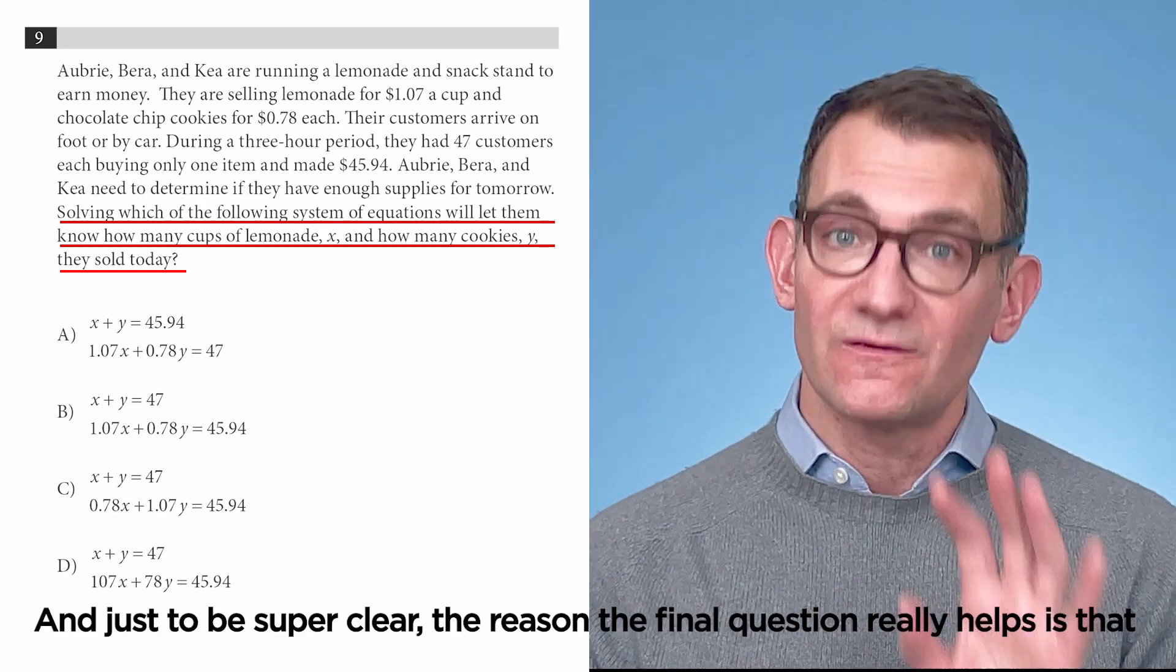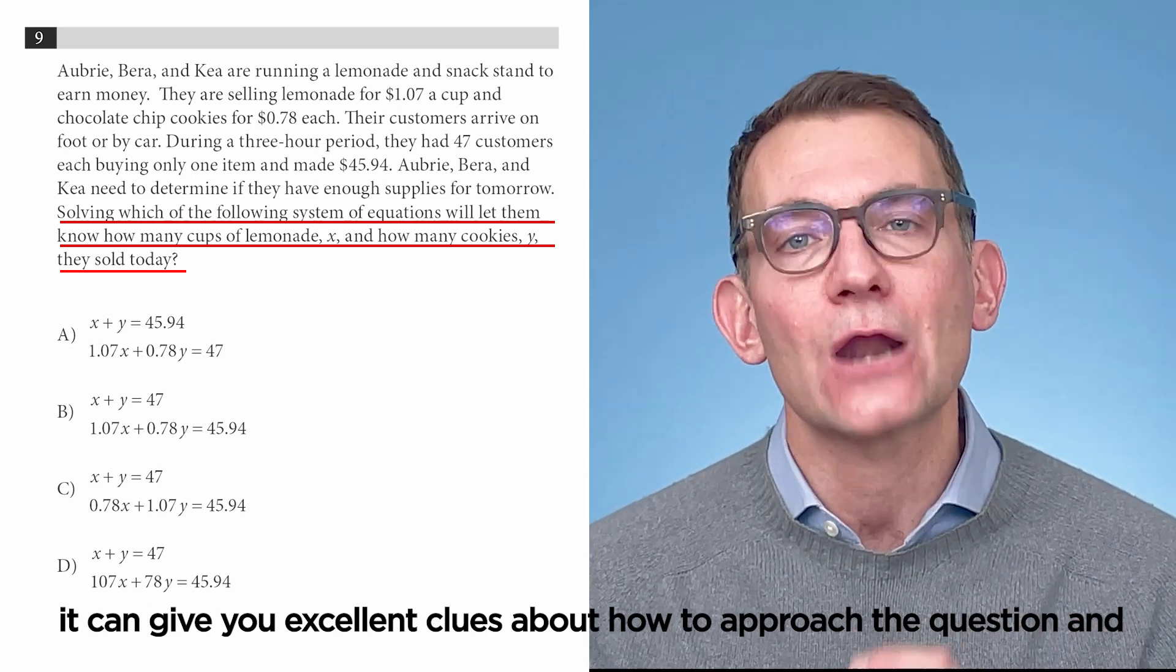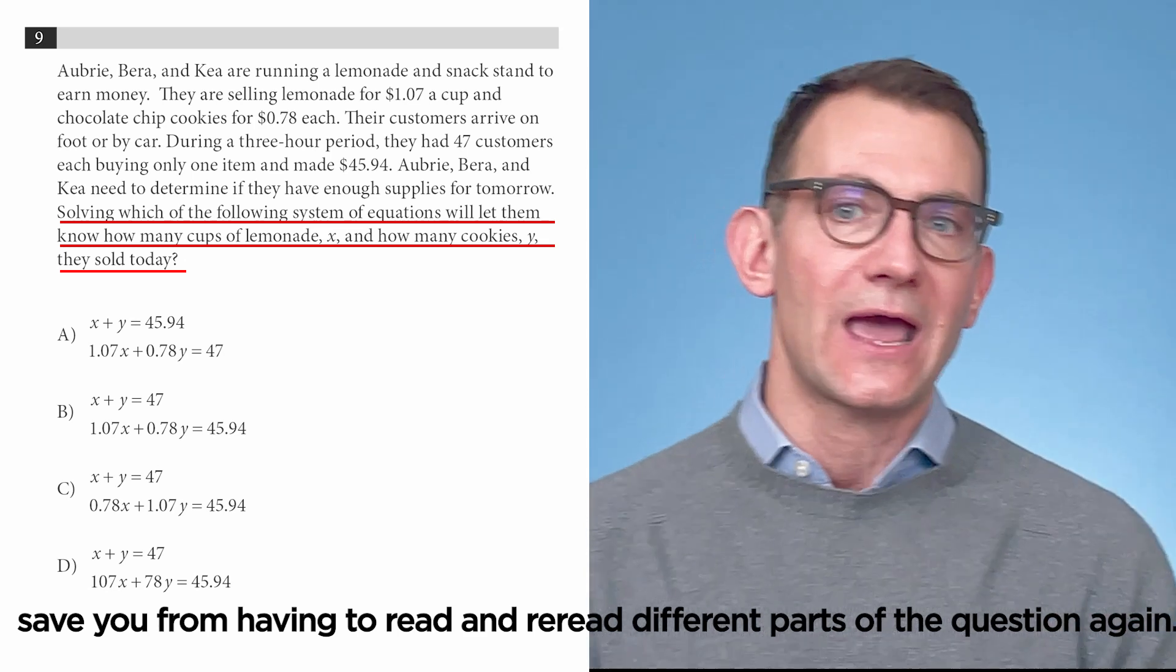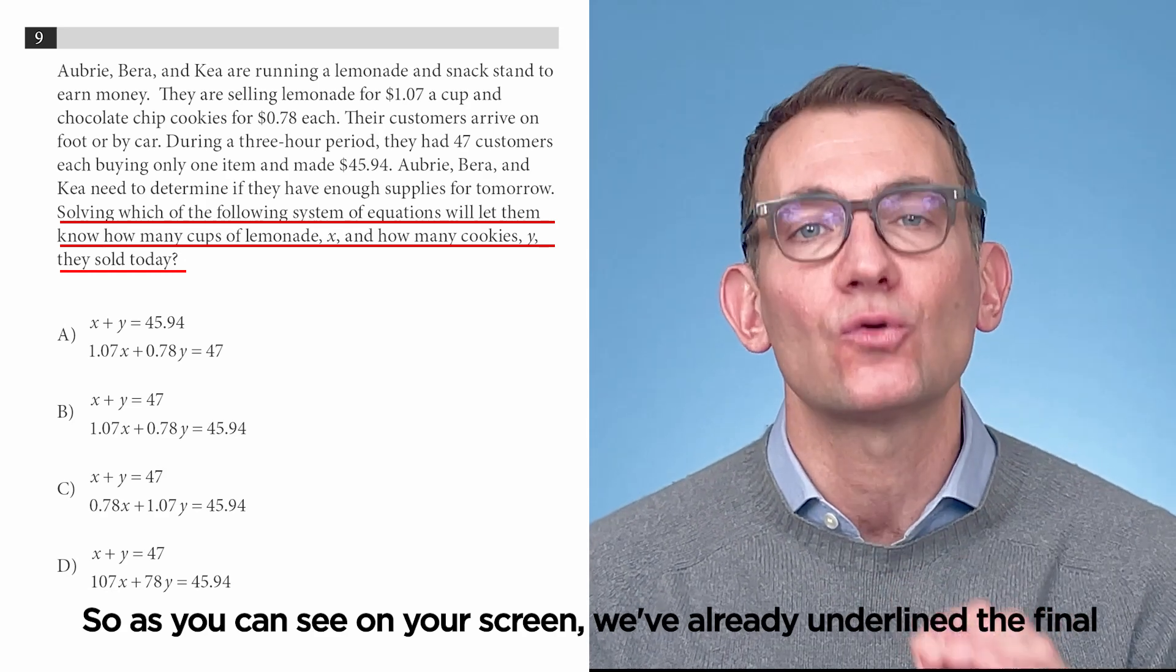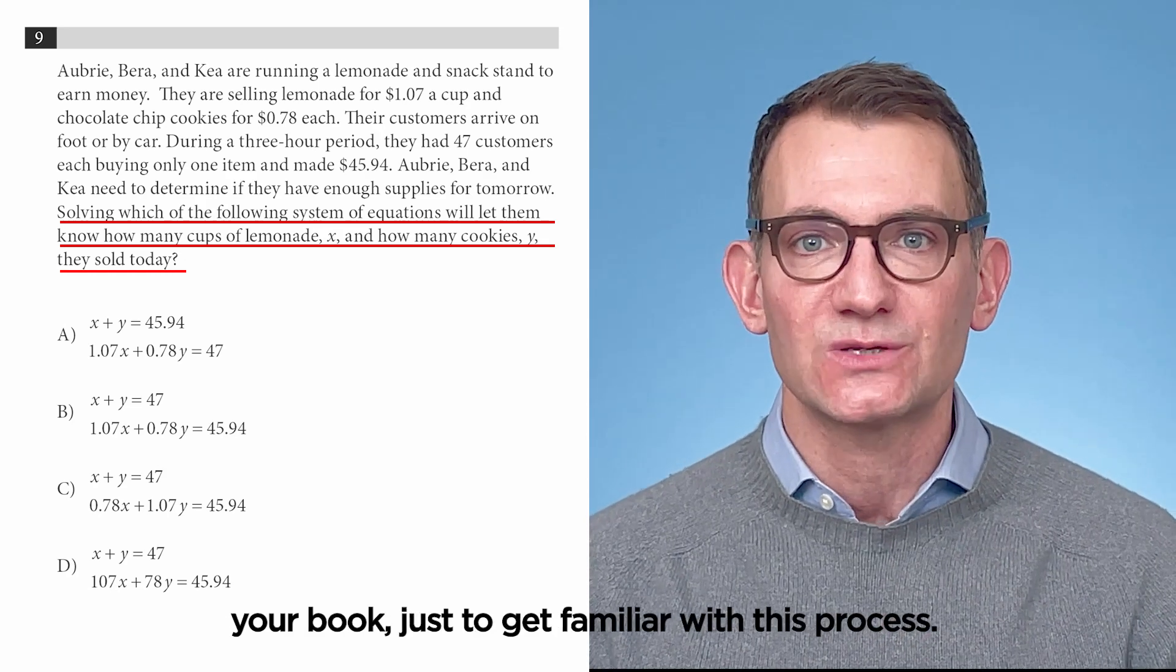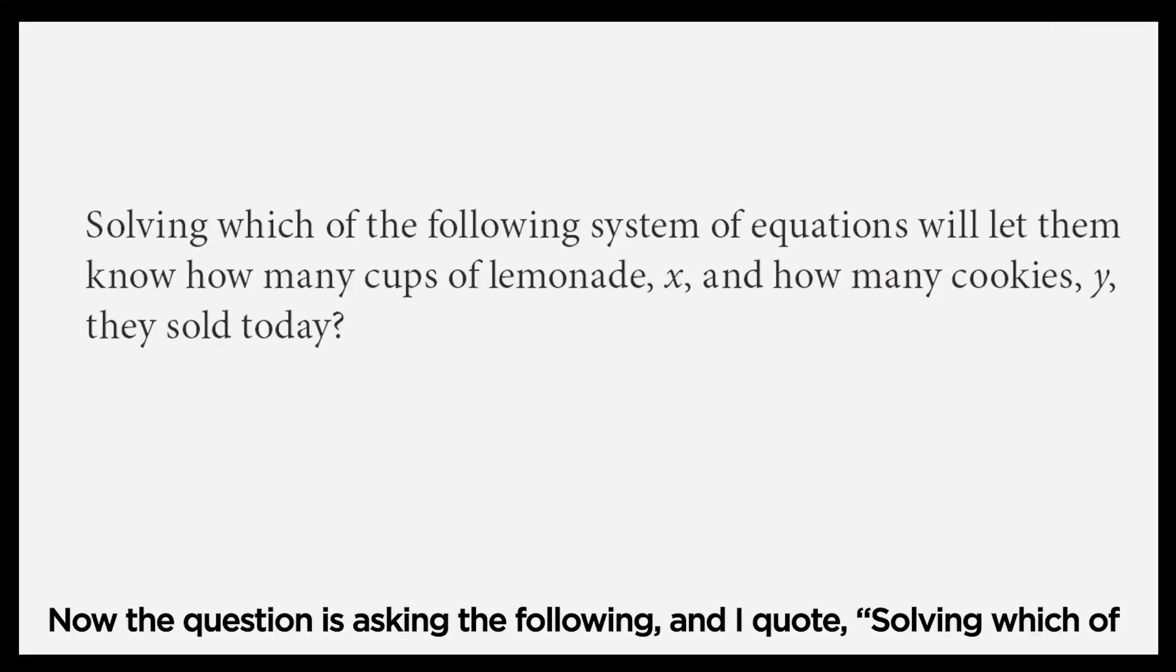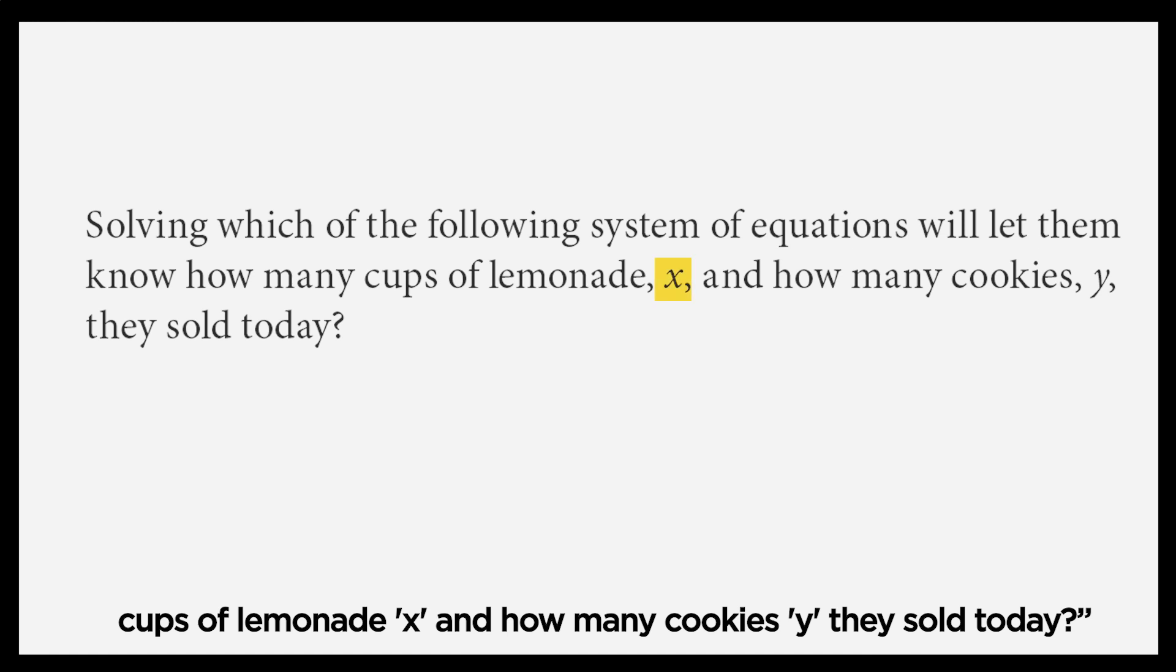And just to be super clear, the reason the final question really helps is that it can give you excellent clues about how to approach the question and save you from having to read and re-read different parts of the question again. So, as you can see on your screen, we've already underlined the final question. But you should, if you're working along with this, underline it in your book, just to get familiar with this process. Now, the question is asking the following, and I quote, solving which of the following systems of equations will let them know how many cups of lemonade X and how many cookies Y they sold today?